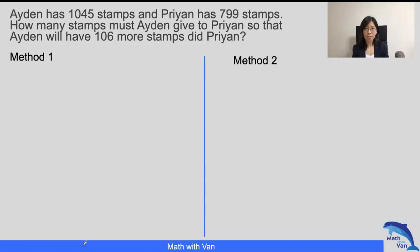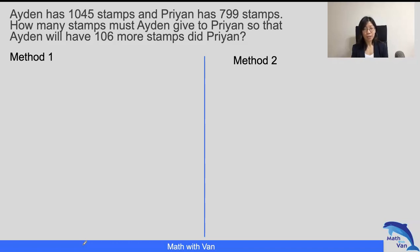In this case, what we do know is that Aiden is giving to Brian, and this is the same as what we call an internal transfer. So the total remains unchanged. Using that knowledge, I would say that my end model will be something like this.